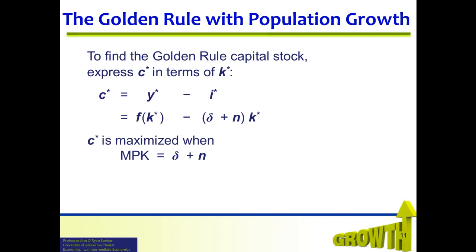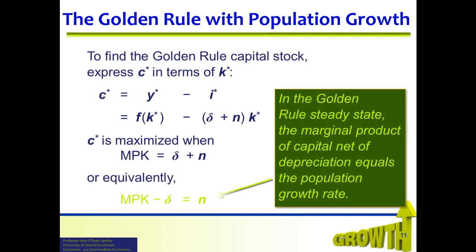Consumption at steady state is maximized when the marginal product of capital equals (delta plus n). What we are saying is that the slope of the production function must exactly equal the slope of the (delta plus n) times k function. To maximize consumption, the two slopes must be equal, which occurs where the marginal product of capital equals (delta plus n), or equivalently, where the marginal product of capital minus delta equals n. In the golden rule steady state, the marginal product of capital net of depreciation equals the population growth rate.